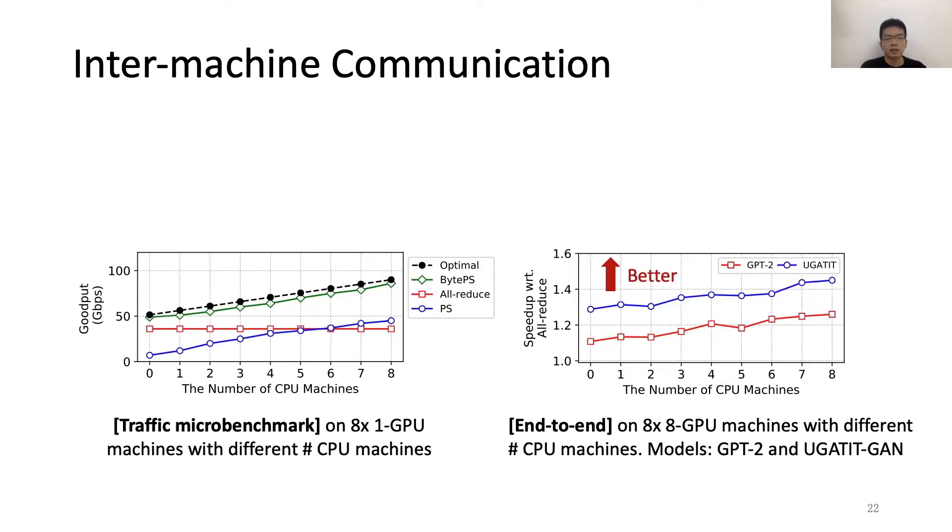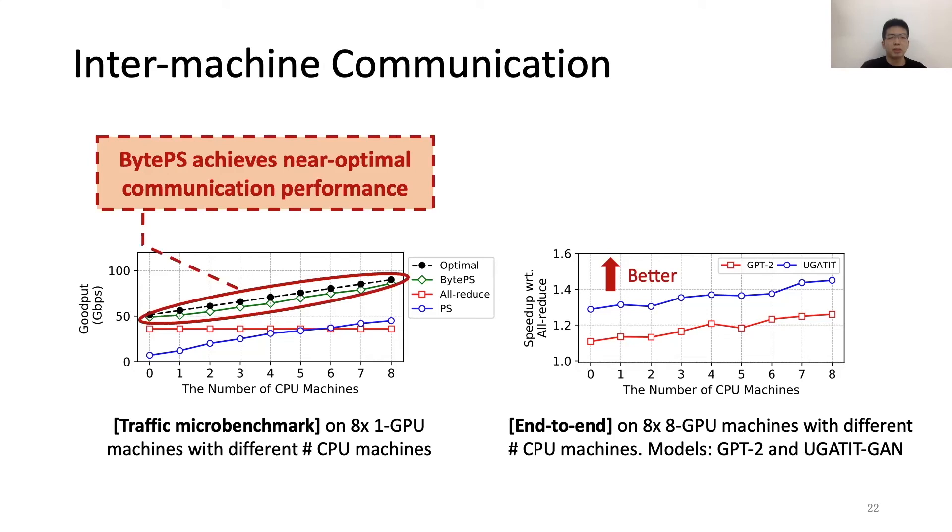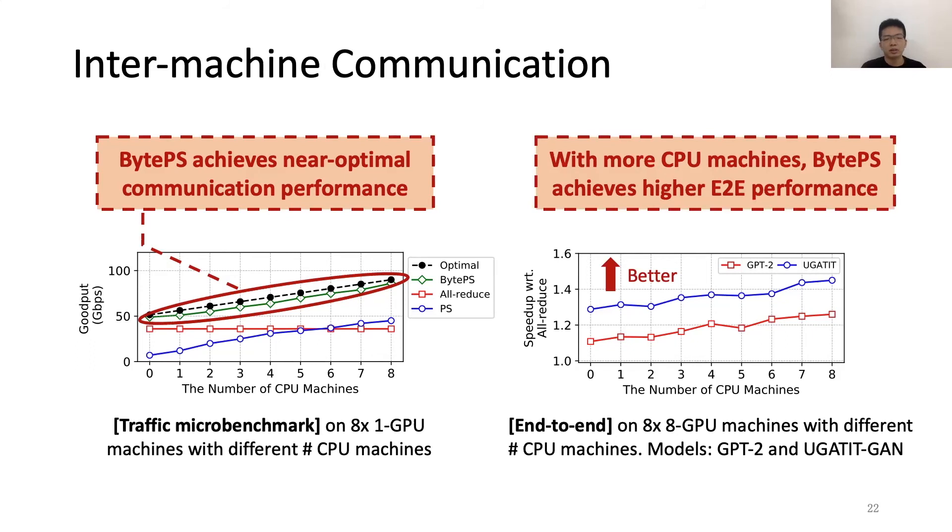First, we test the inter-machine communication. The figure on the left shows the traffic microbenchmark on eight GPU machines. We can see that BytePS can achieve near-optimal communication performance. And the figure on the right shows the end-to-end result on 64 GPUs using two models, including GPT-2 and the WGAN-GP. We see that with more CPU machines, BytePS can achieve higher end-to-end performance.